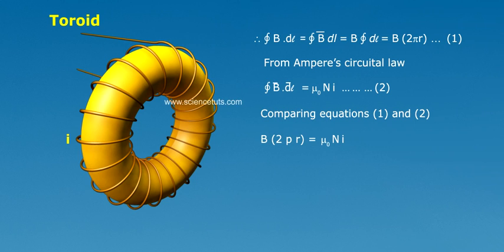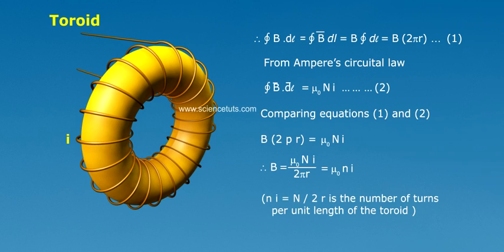B into 2 pi R equals to mu naught N I. Therefore, B equals to mu naught N I by 2 pi R, where N by 2 pi R is the number of turns per unit length of the toroid.